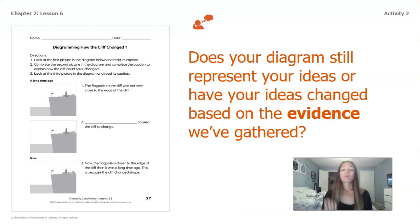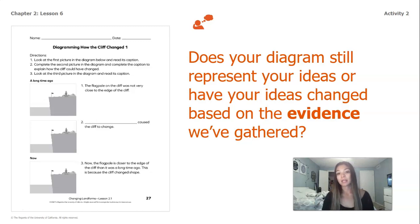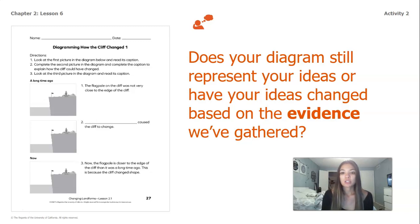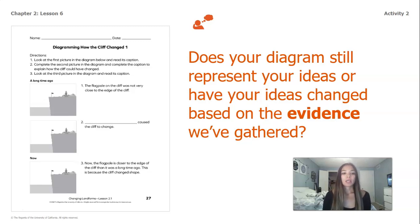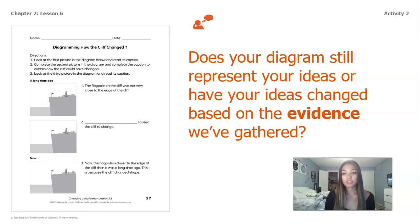Remember that a diagram is another way that we can show something bigger and it's just an easier way of showing it. So does your diagram still represent your ideas, or have your ideas changed based on the evidence that we've gathered? We worked on this diagram in our first lesson of chapter 2, and we were talking about our ideas about what might have caused the cliff to change.